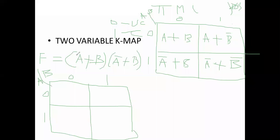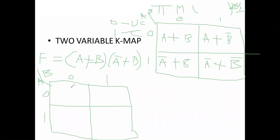In this product of sums, inversely we are considering: based on the expression we are putting zero in the corresponding cell. Previously in sum of products we were putting one in the corresponding cell. Here we are taking the sum terms, so inversely we put zero. A plus B means the corresponding cell is the 0,0 cell — we put zero there.